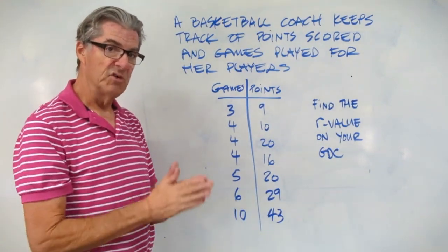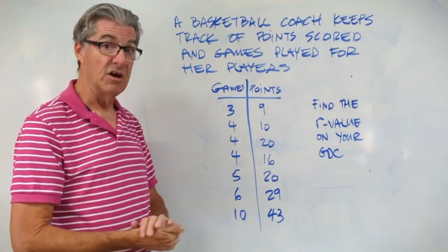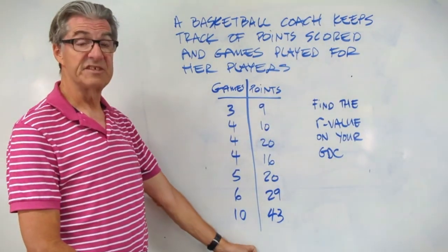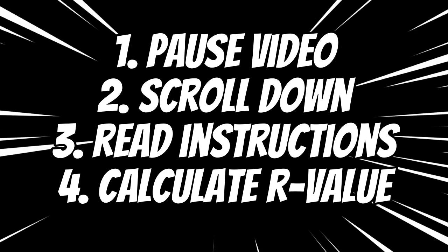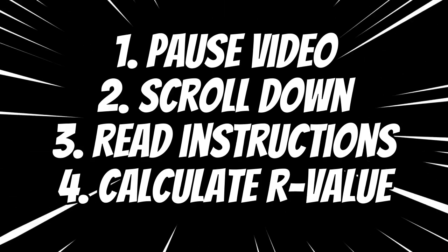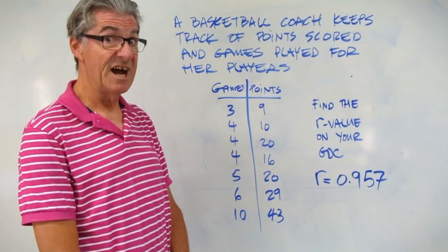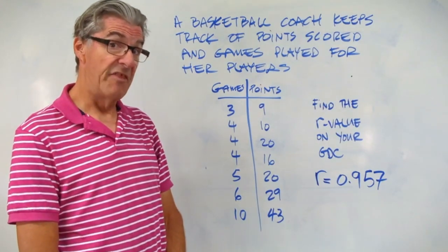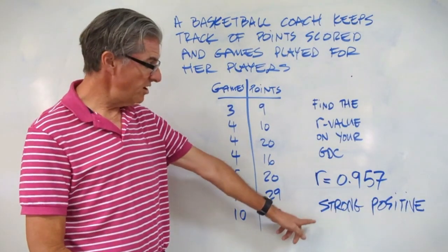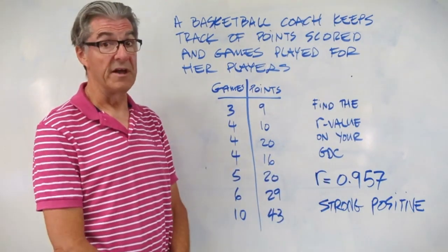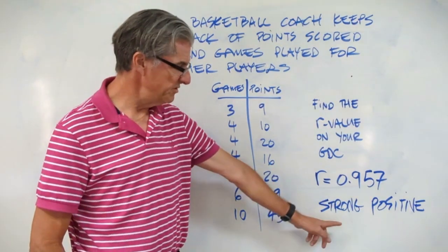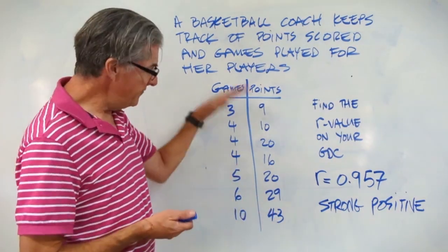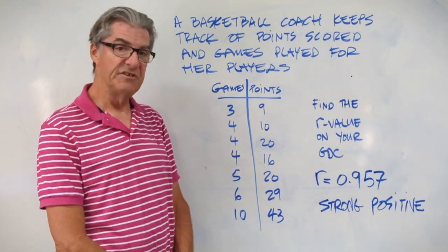I'm going to post some instructions and some video links in the comments on this video. Pause the video, get out your calculator, and go ahead and find the R value for this data set. Here's what I get when I put this in my TI-84: an R value of 0.957. Pause the video and describe that correlation. If you got strong positive, you're right. This is almost 1 — very close to a perfect correlation, but not quite — so we say strong positive correlation. If you're wanting to experiment, see if you can write up a data set that would give you a perfect correlation.